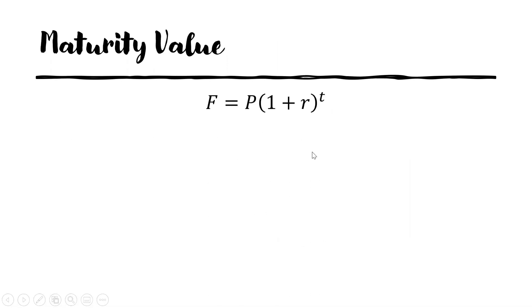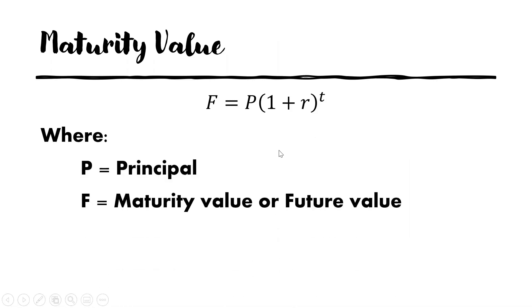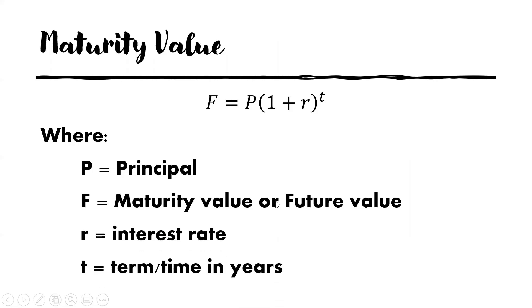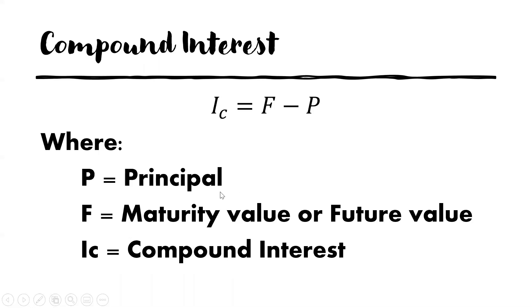The formula for the maturity value is F equals P times 1 plus R raised to T, where P is the principal, F is the maturity value or the future value, R is the interest rate, and T is the time in years. The formula for the compound interest is IC equals F minus P, where P is the principal, F is the maturity value or the future value, and IC is the compound interest.